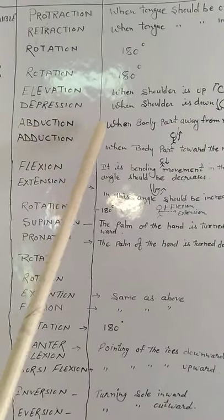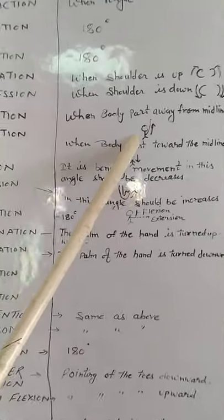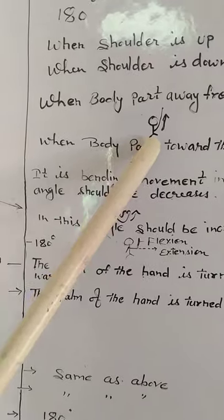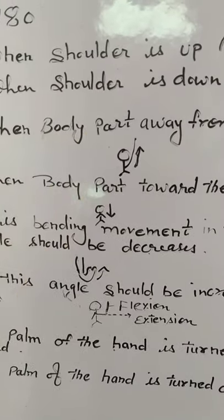Abduction means when body part away from midline. Now see this diagram. Hand of this athlete is up. Hand of this athlete is up means away from the midline is called abduction.